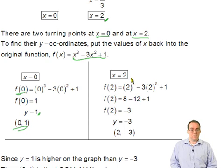And you do the same with x = 2. You put 2 back into the original function, the one that says y equals, or f(x) equals. And you put it back in, and you get 2³ - 3(2²) + 1, which means f(2) works out to be -3. So therefore, that means that there's a local max or a local min at (0,1), and at (2,-3).